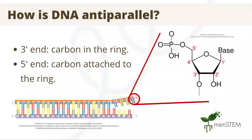In DNA, one strand runs from the three prime to five prime end, and another runs from the five prime to three prime end. This characteristic is important to note because replication can only occur in the five prime to three prime direction, and we will investigate the impacts of this later.